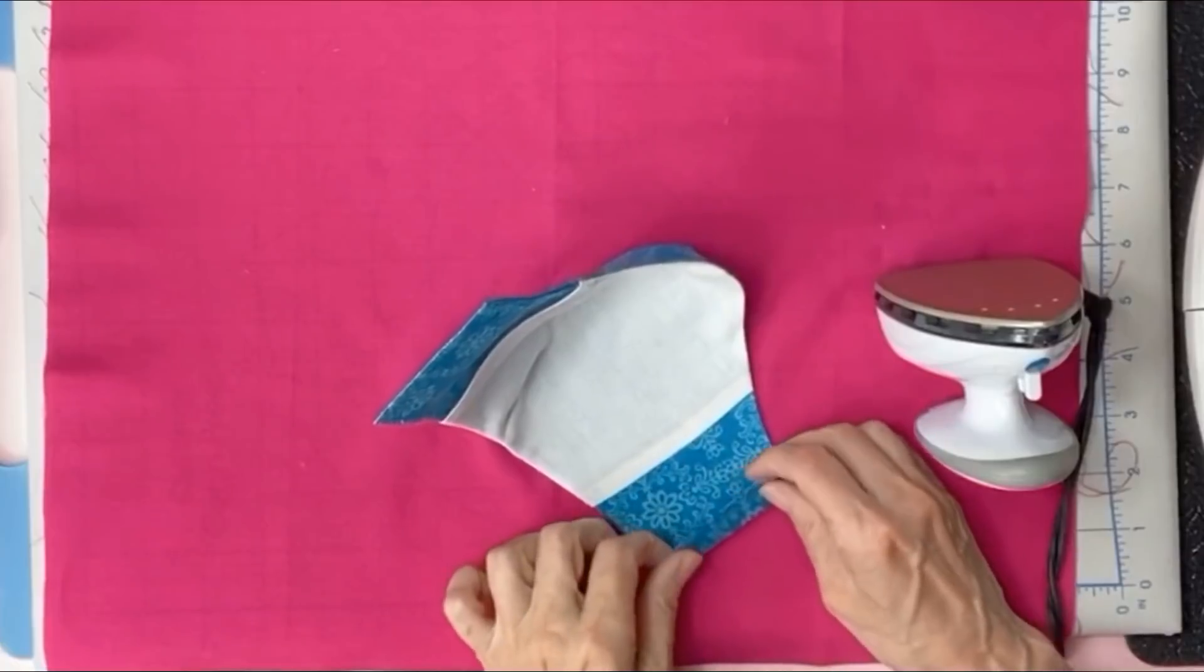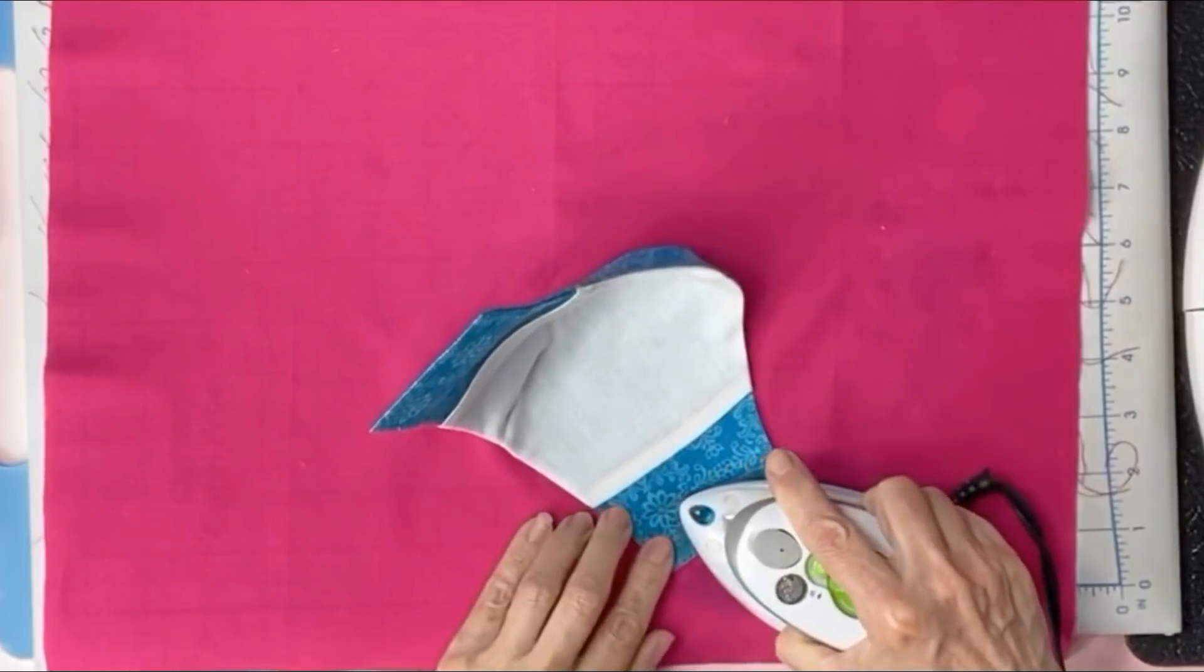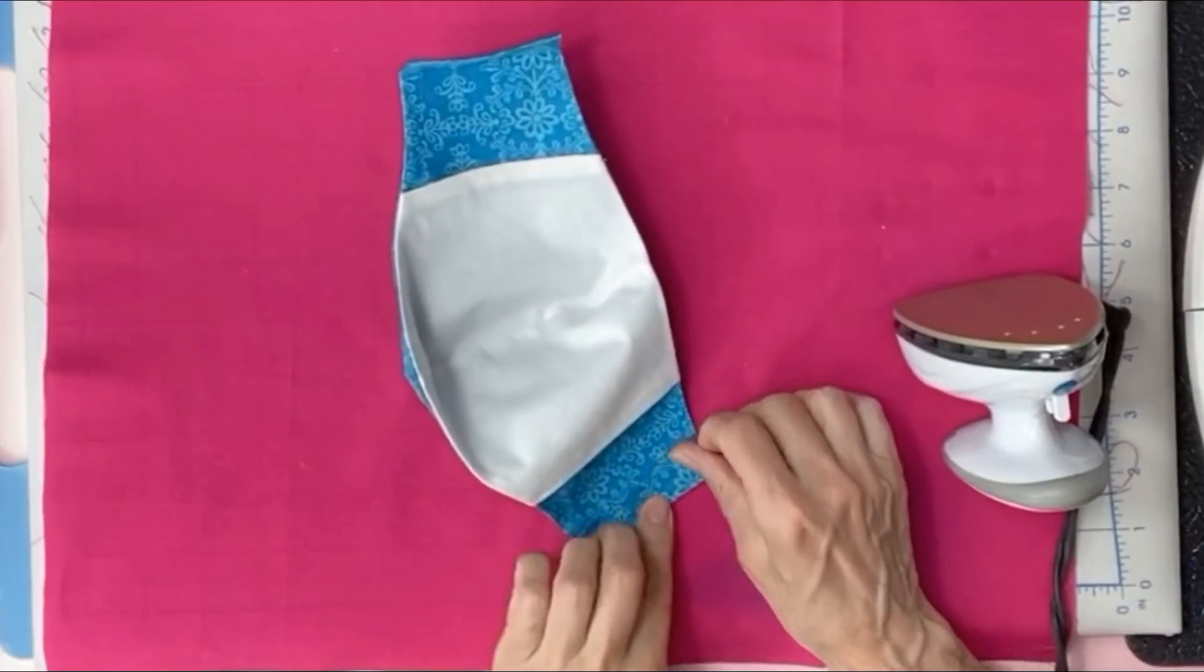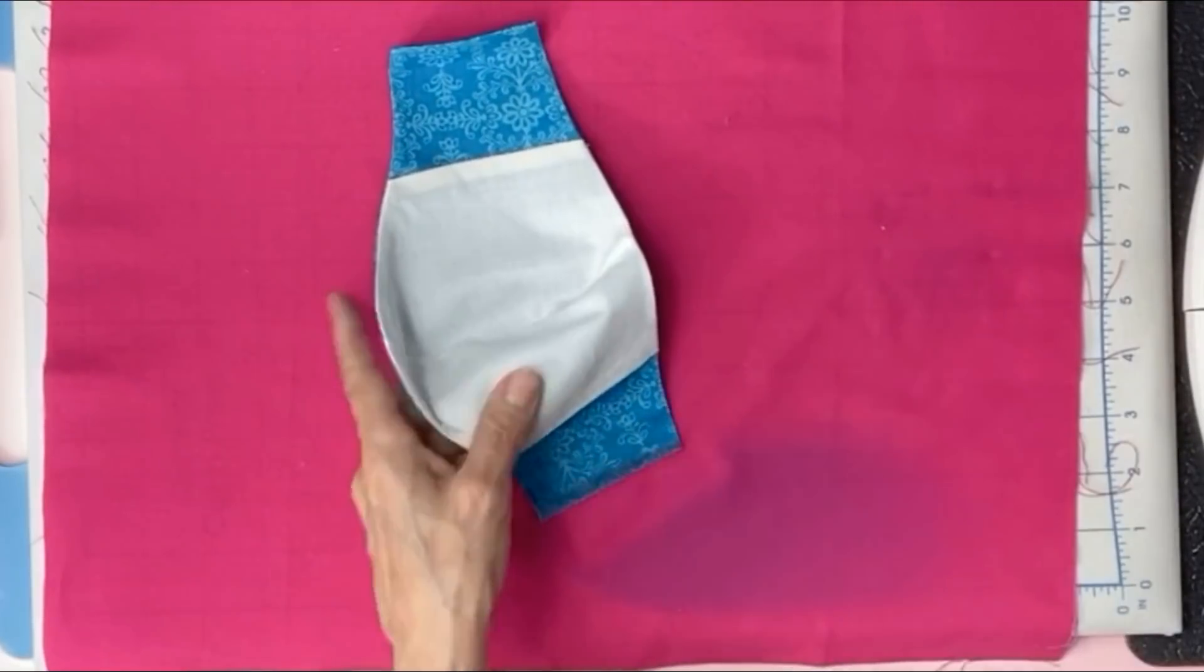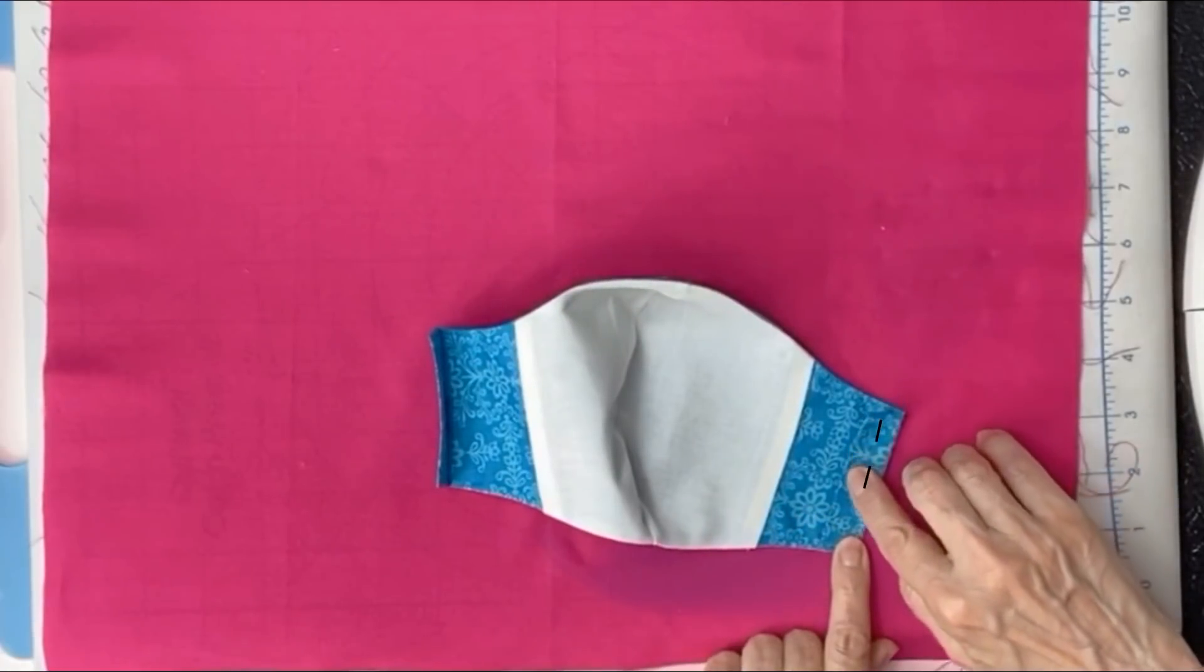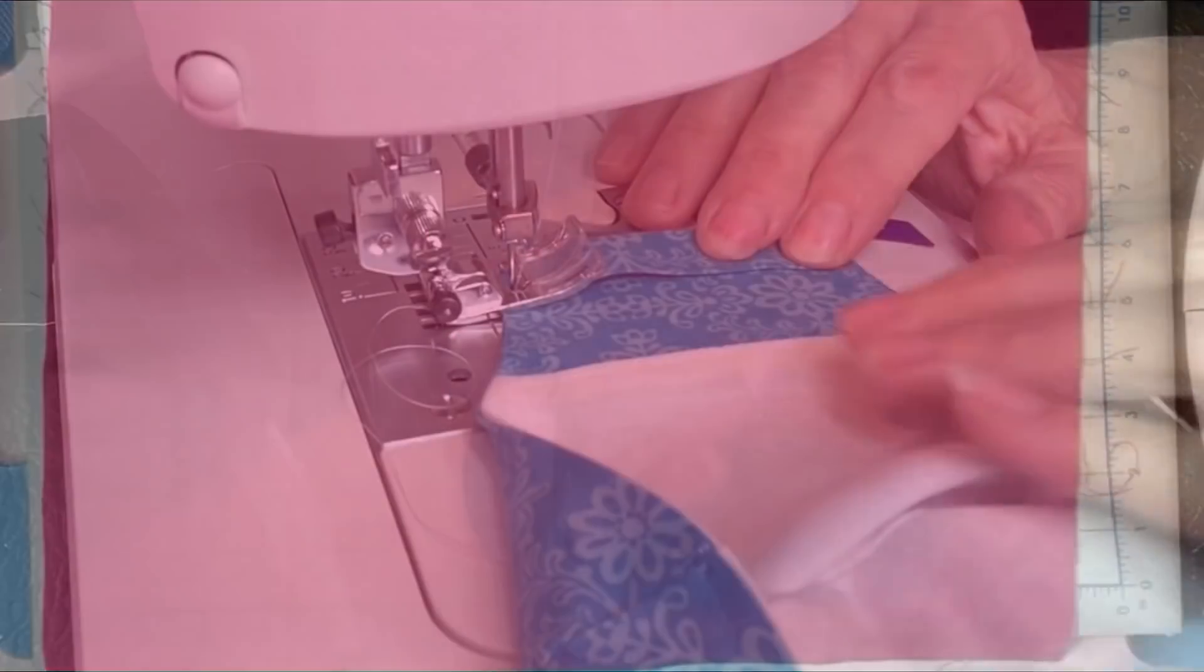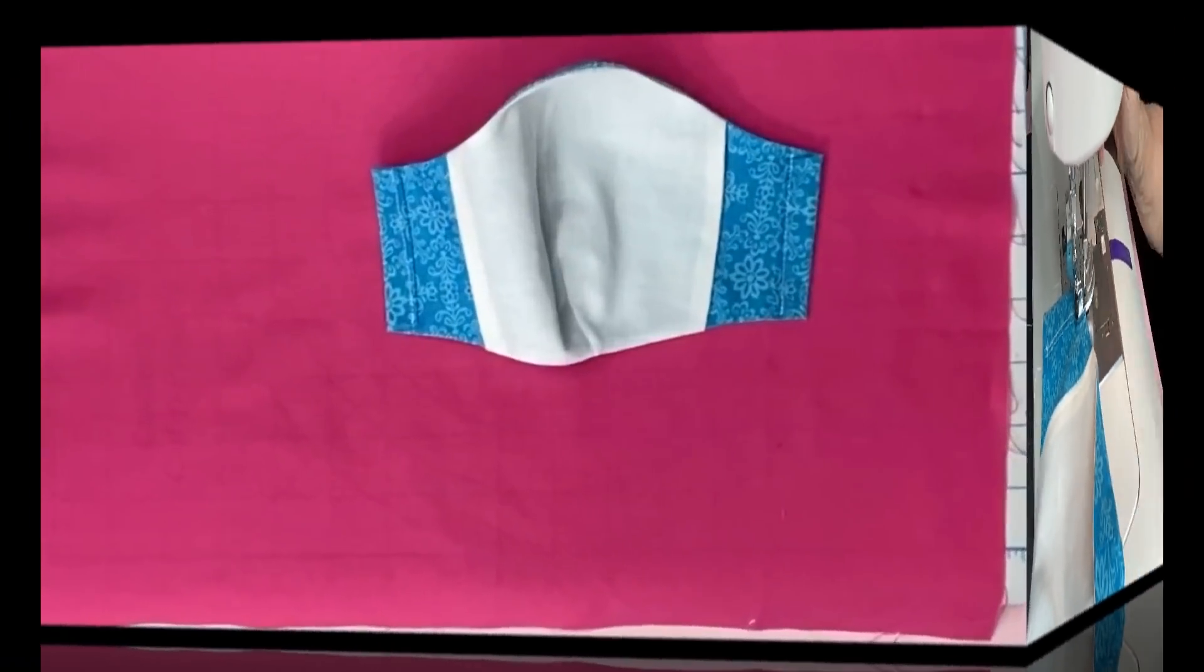Fold half an inch and press. Repeat for the other side. Half an inch and press. Take it to the sewing machine and sew straight down. Repeat for the other side. Straight down. Once you have your ends sewed down, we will work on the nose piece.